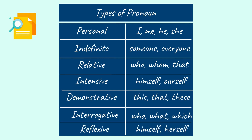Let me quickly revise the seven types of pronouns we learned. Number one: Personal pronoun — I, me, he, she. Number two: Indefinite pronoun — someone, everyone. Number three: Relative pronoun — who, whom, that. Number four: Intensive pronoun — himself, ourselves. Number five: Demonstrative pronoun — this, that, these. Number six: Interrogative pronoun — who, what, which. Number seven: Reflexive pronoun — himself, herself.